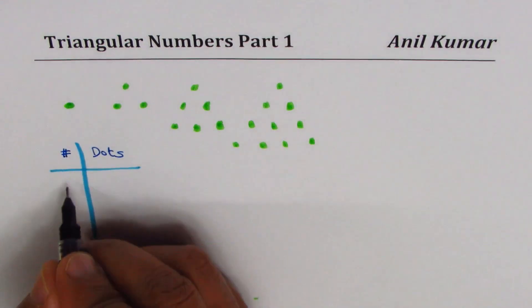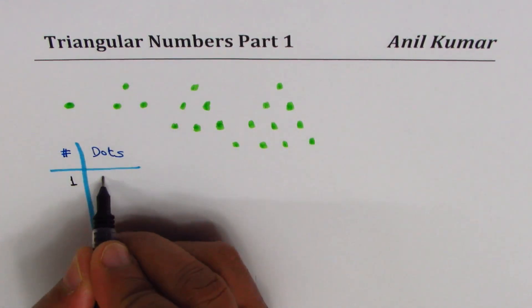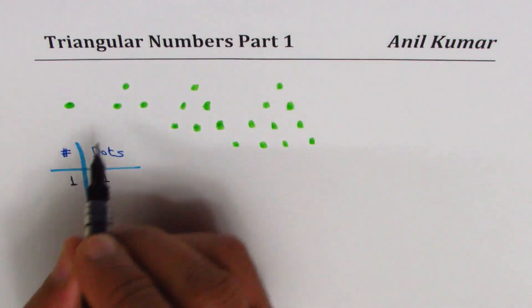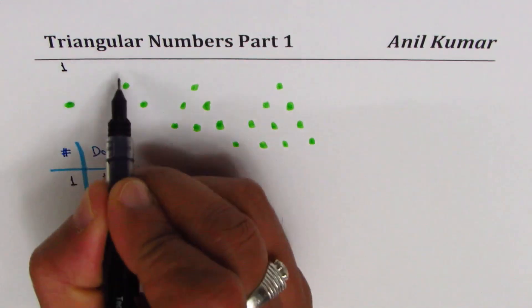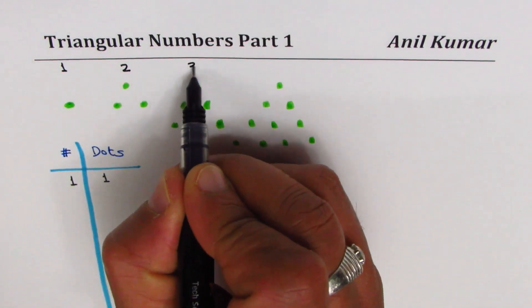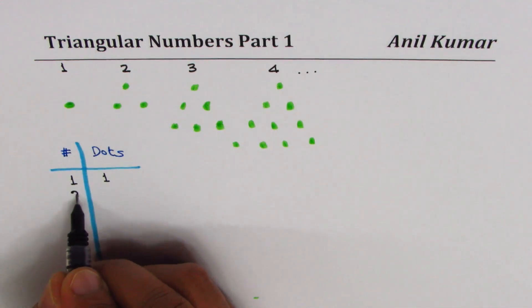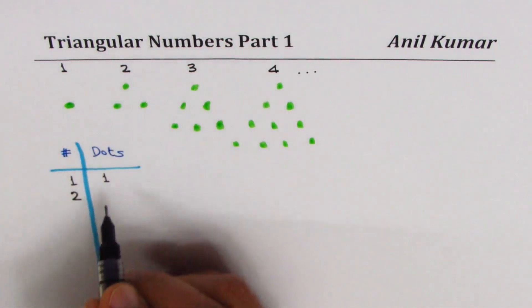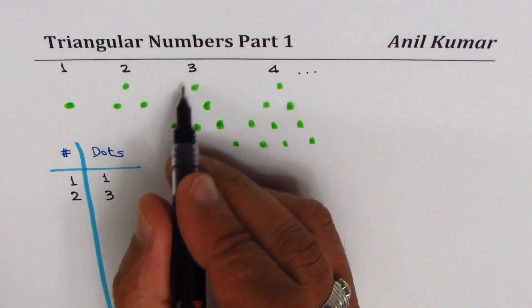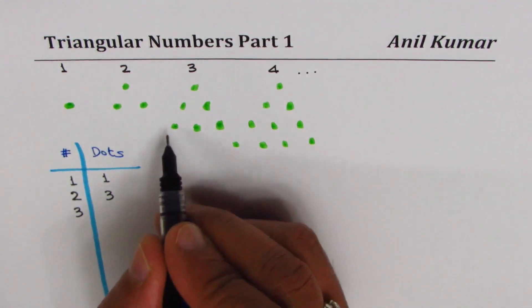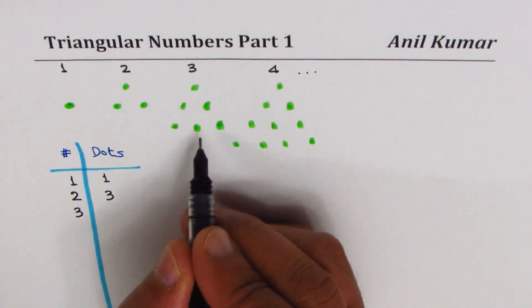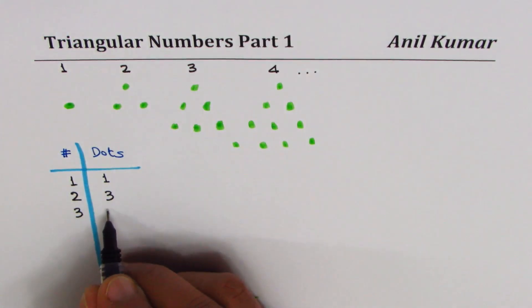we get one dot. In pattern number two, this is our pattern number one. This is pattern two, three, four, and so on. So in pattern number two, you can count we have three dots. In pattern number three, we have three more than three, so it becomes six.